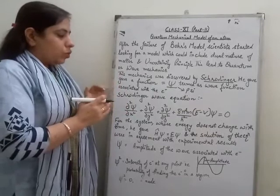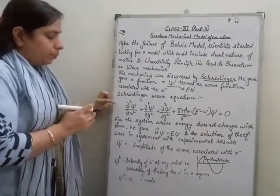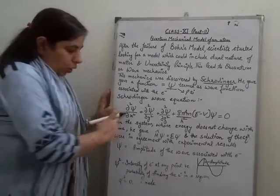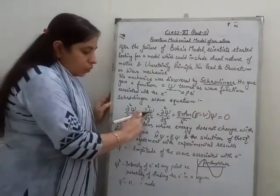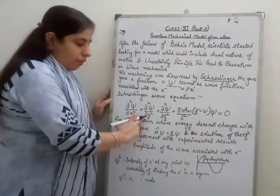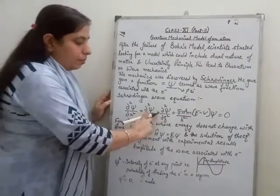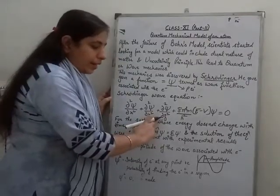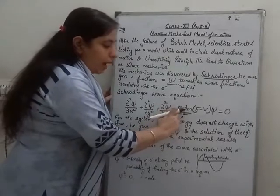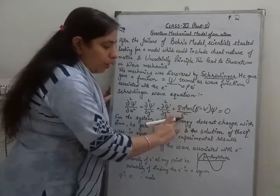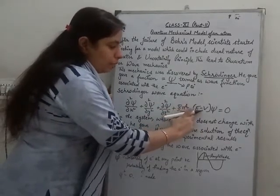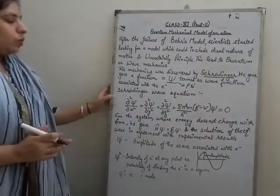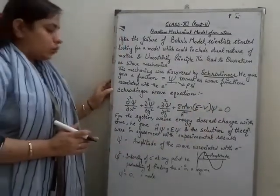Accordingly, Schrödinger gave a wave equation: ∂²ψ/∂x² along the x-axis, plus ∂²ψ/∂y² along the y-axis, plus ∂²ψ/∂z² along the z-axis, plus (8π²m/h²)(E − V)ψ = 0. This equation was given by Schrödinger.